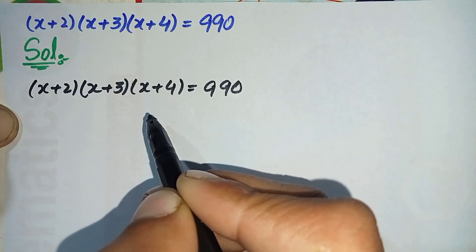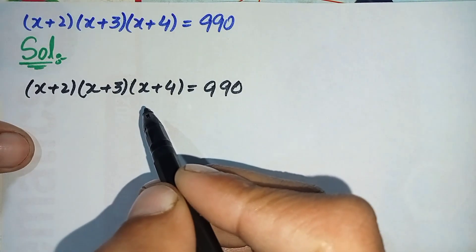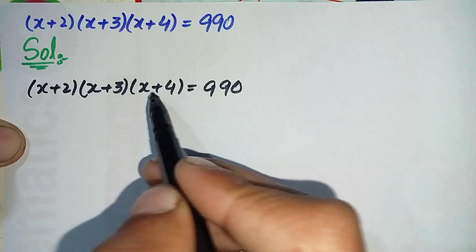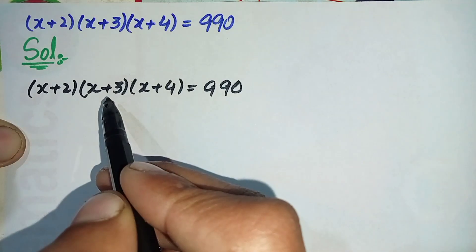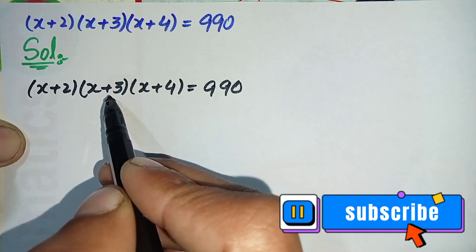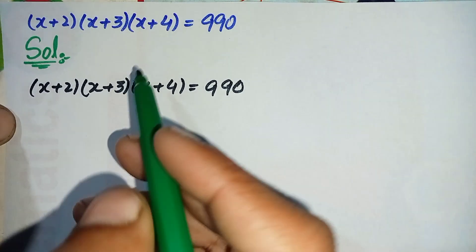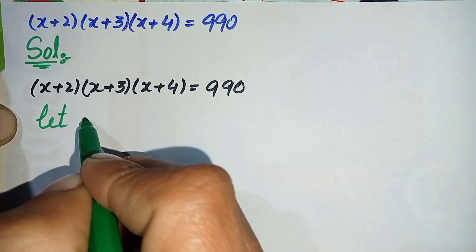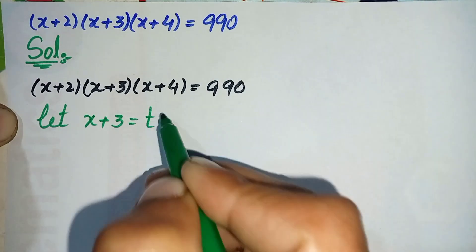To solve this question there will be different approaches, but my approach is to find the mean of these three expressions. If we add these three expressions and divide by 3, we get x+3. So I will replace x+3 with another variable — let that variable be t. So let x+3 = t.